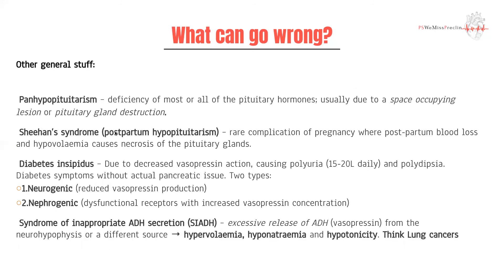Second is Sheehan syndrome, also called postpartum hypopituitarism. In women who experience postpartum hemorrhage — a complication of labor — there is acute low blood volume and hypovolemia. Because the pituitary gland is such a vascular organ requiring so much blood, that sudden reduction can cause necrosis of the pituitary gland, resulting in Sheehan syndrome.